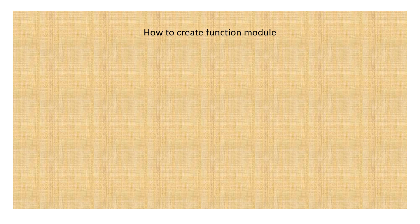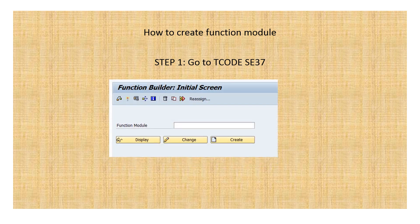The main part of this video is how to create a function module. First, you need to go to T-code SE37. Once you go there you get a screen where you can write the function module name you want to create, then click on the Create option. If you want to display an existing function module, give the name and click Display. To modify it, click Change. To execute independently, give the name and click the Execute button from the toolbar.